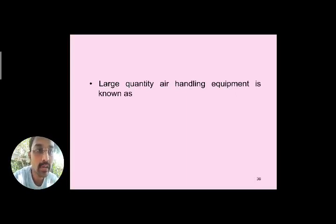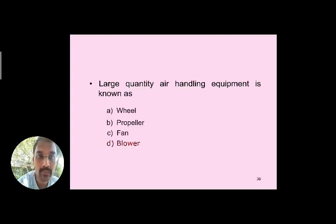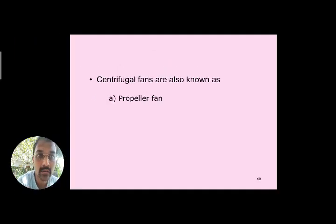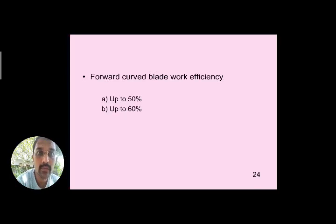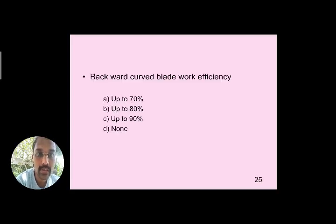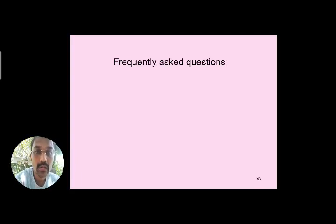Forward curved blade fans work with efficiency up to 75 percent. Backward curved blade fans are more efficient — 80 percent — compared to radial and forward curved blades. These are frequently asked questions: illustrate the working of a propeller fan with a diagram; illustrate the working of a tube axial fan and vane axial fan; how are centrifugal fans classified — explain any two types.